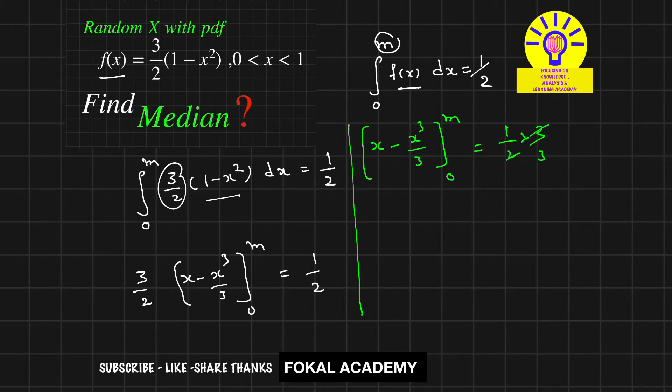Now apply the limits. We get m minus m cubed over 3, and for 0 it equals 0. This becomes m cubed minus 3m plus 1 equals 0.